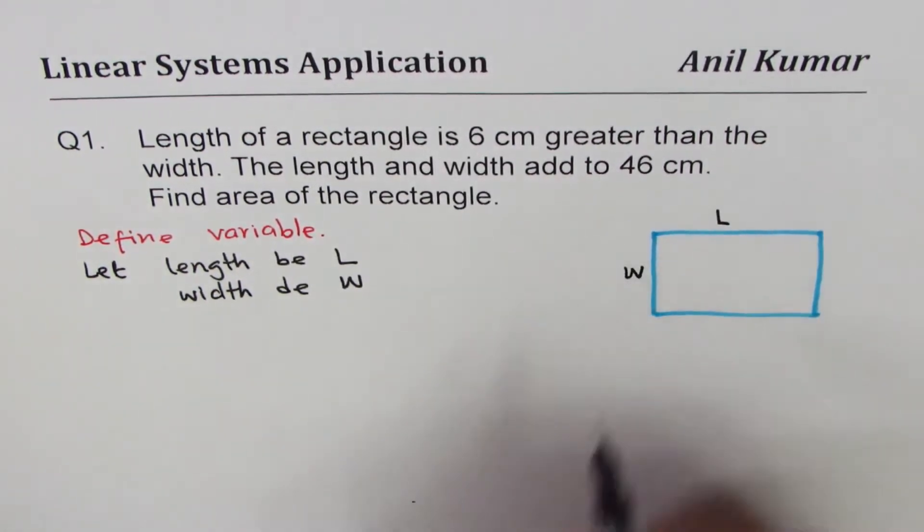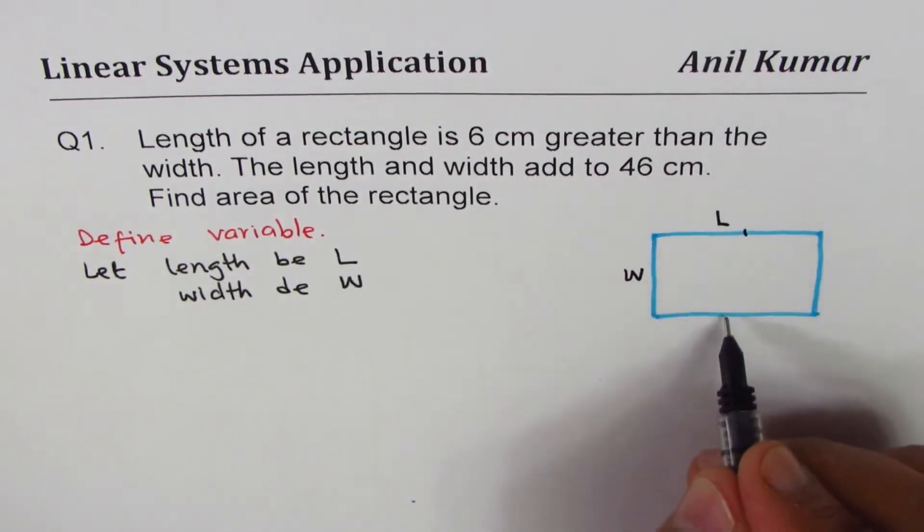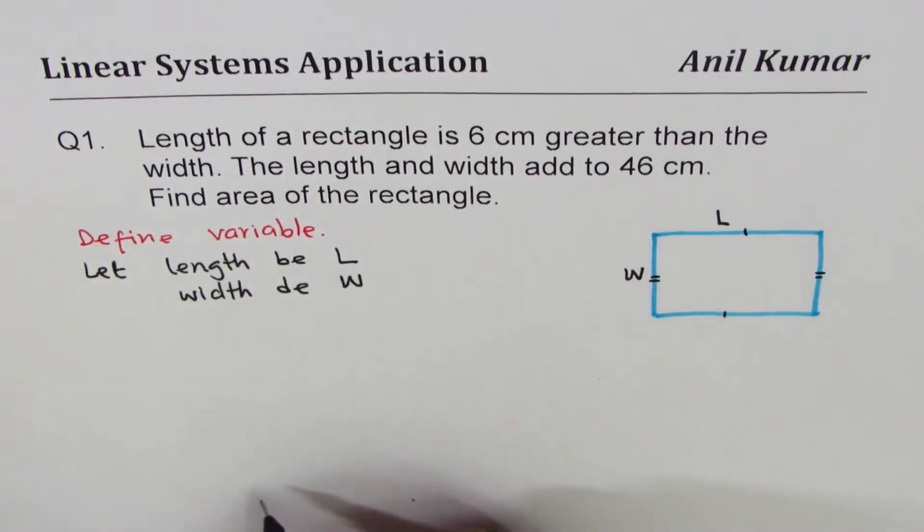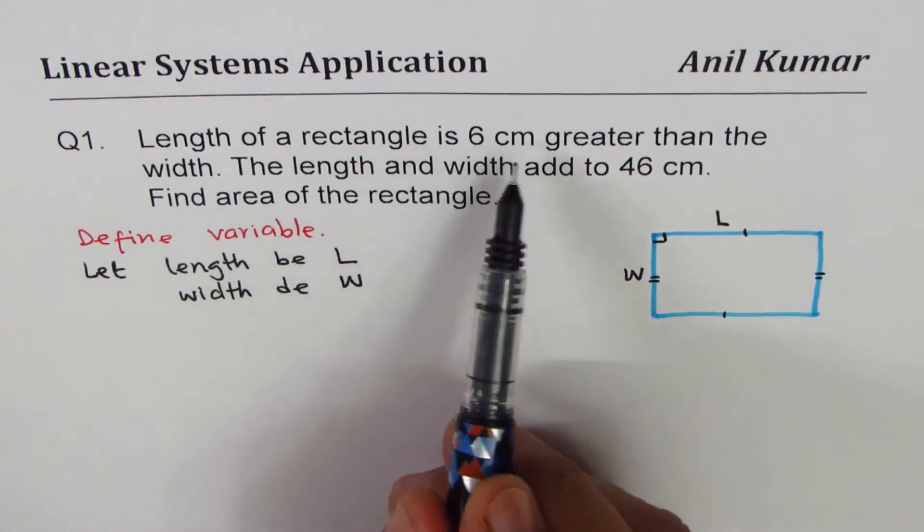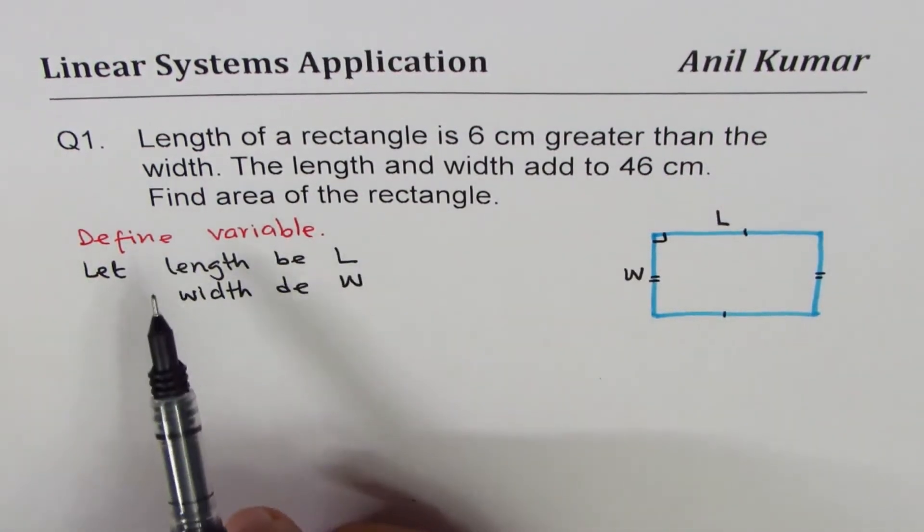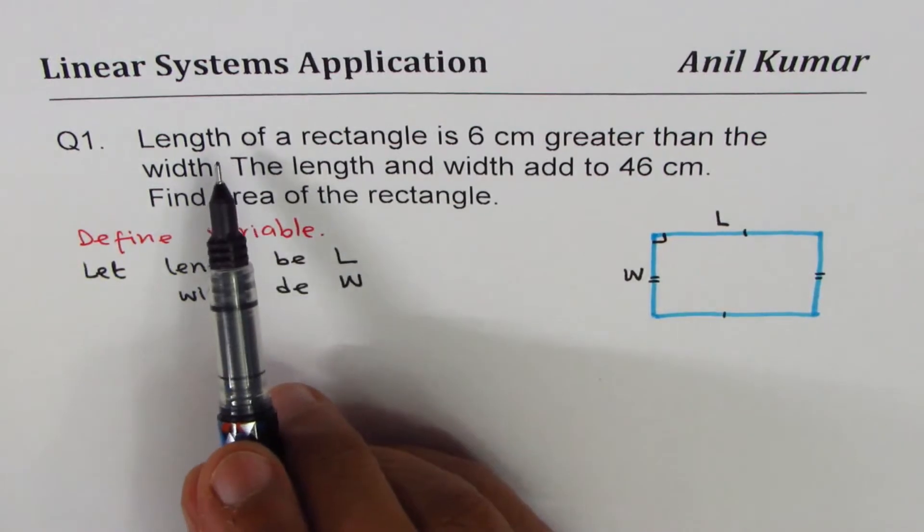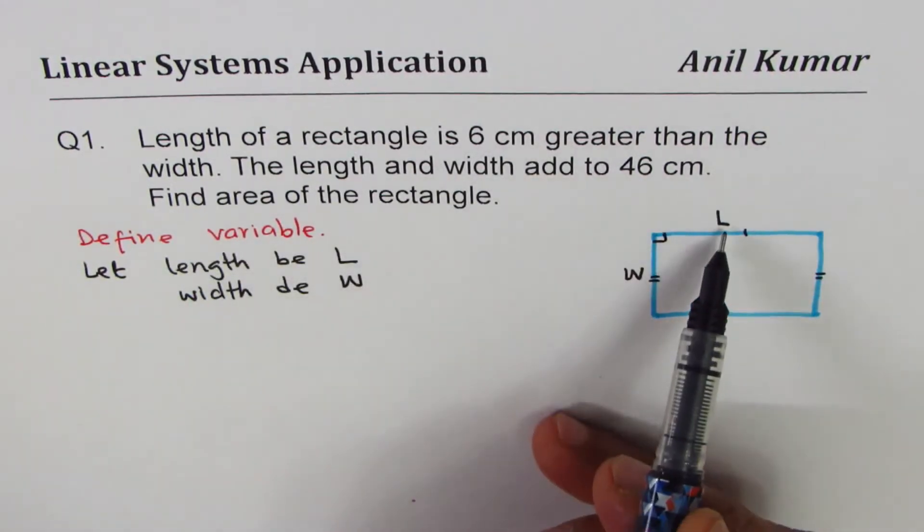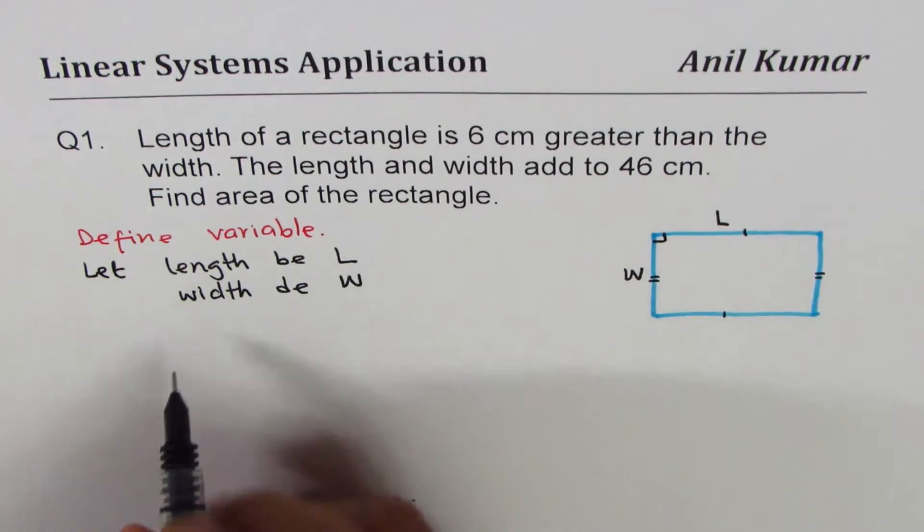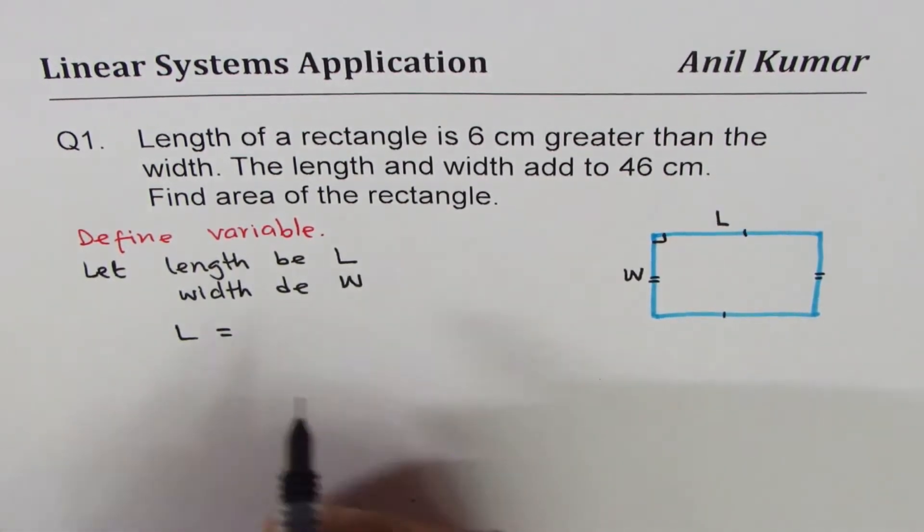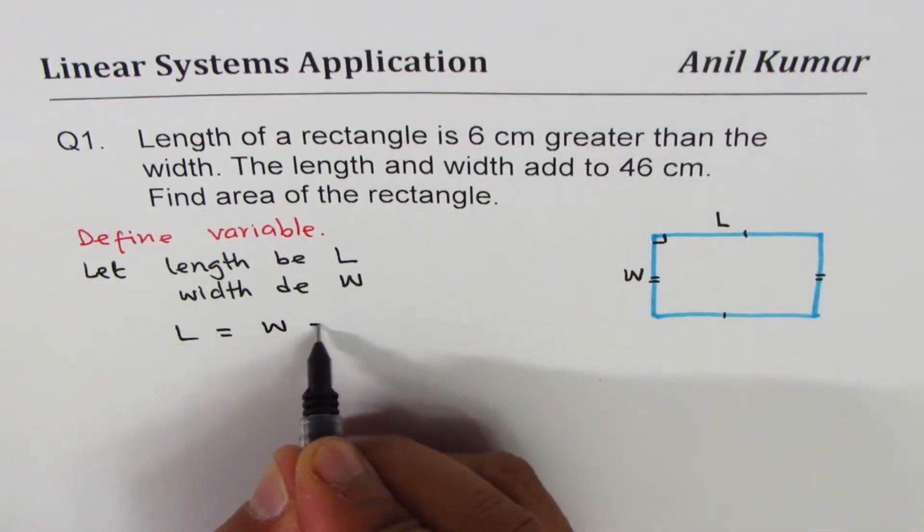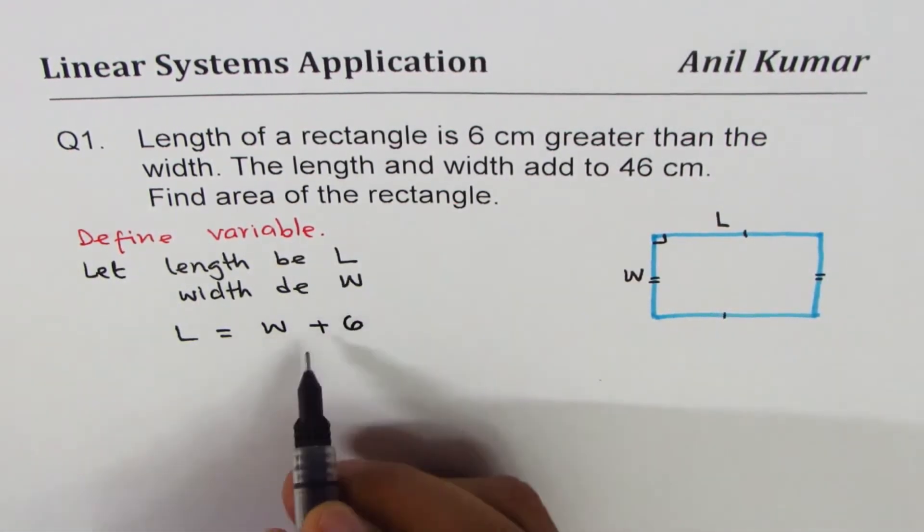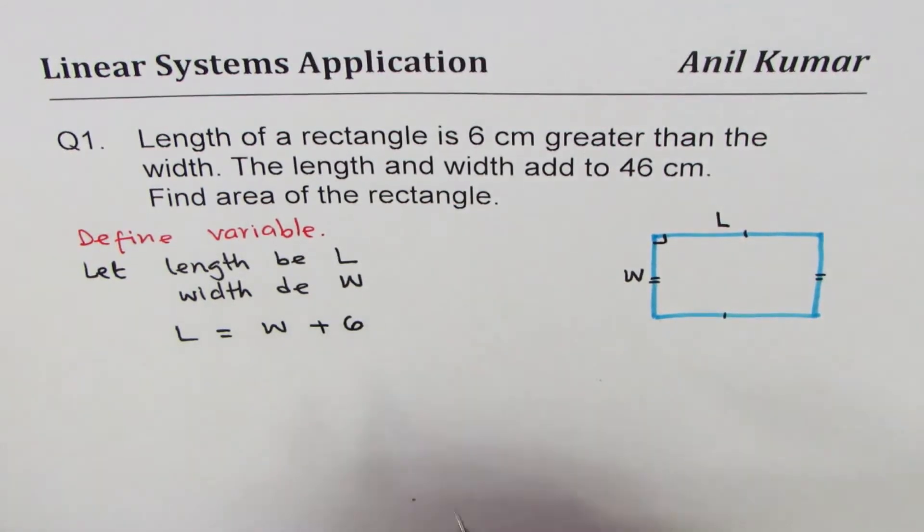In our diagram this is length. The length of the rectangle is 6 cm greater than the width. It means length of the rectangle is 6 cm greater, so we can write one equation: length is 6 cm greater than width, so L = W + 6.